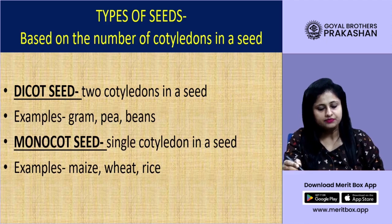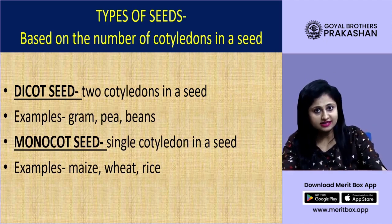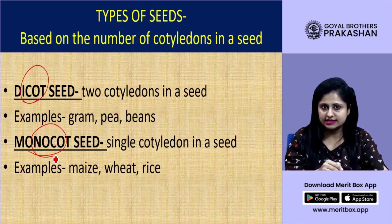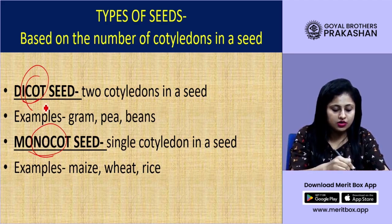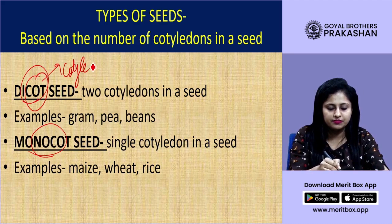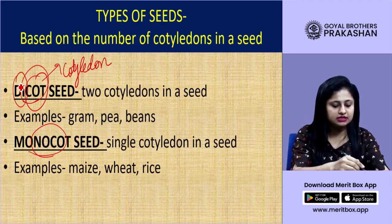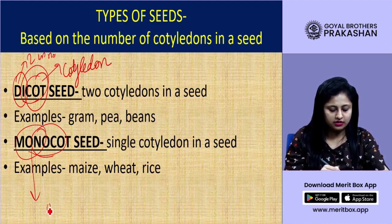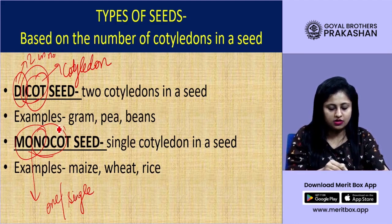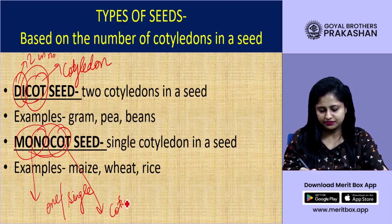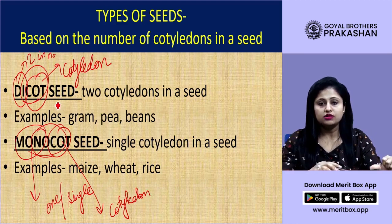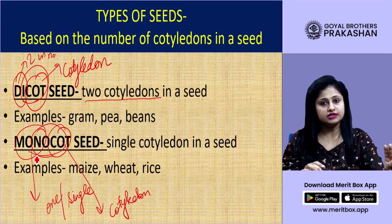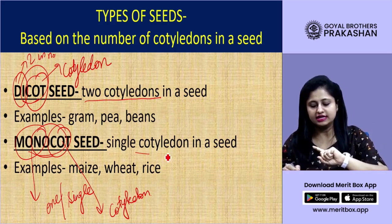Types of seeds: based on the number of cotyledons, seeds can be divided into dicot seed and monocot seed. Dicot means two cotyledons (di = two, cot = cotyledon) and monocot means one cotyledon (mono = one). Dicot seeds have two cotyledons, while monocot seeds have only one single cotyledon.